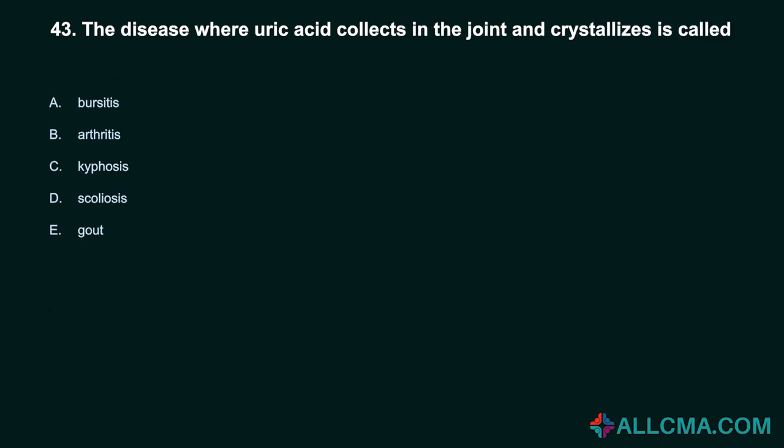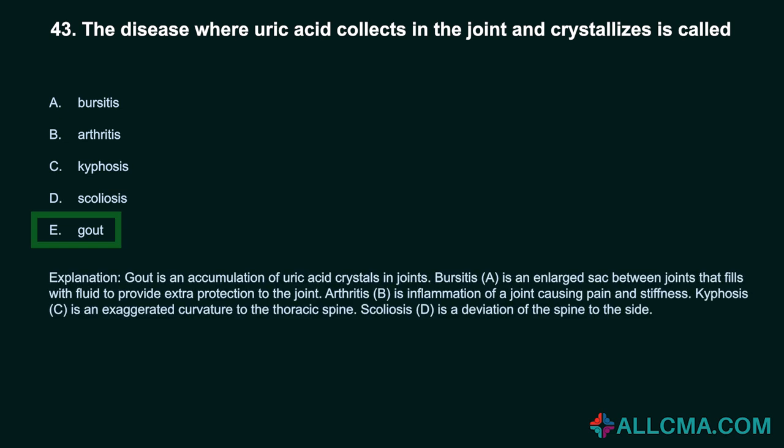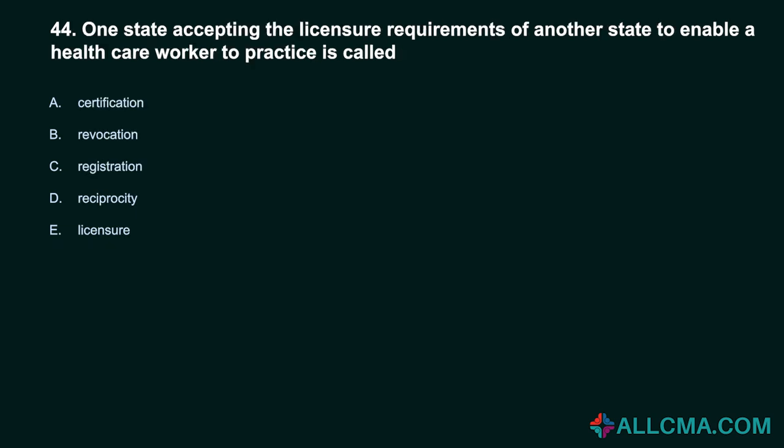Question 43: The disease where uric acid collects in the joint and crystallizes is called: A. Bursitis. B. Arthritis. C. Kyphosis. D. Scoliosis. E. Gout. Correct answer: E. Gout. Gout is an accumulation of uric acid crystals in joints. Bursitis is an enlarged sac between joints that fills with fluid to provide extra protection. Arthritis is inflammation of a joint causing pain and stiffness. Kyphosis is an exaggerated curvature of the thoracic spine. Scoliosis is a deviation of the spine to the side.